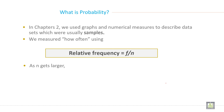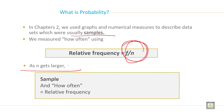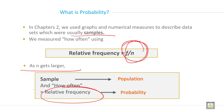Now, what is probability? In the second chapter, we used graphs and numerical measurements to describe data sets, which are usually samples. We measured how often using relative frequency — relative frequency is just frequency divided by n. It is called relative frequency or proportion. As n gets larger, the sample relative frequency approaches the population relative frequency, which is a probability. When you are talking about population, it is a probability.